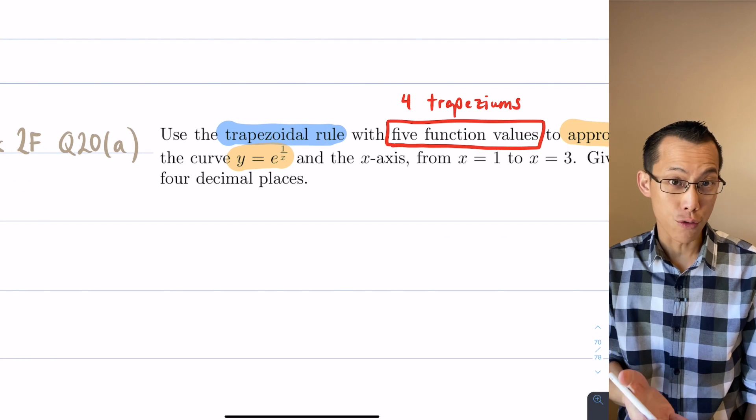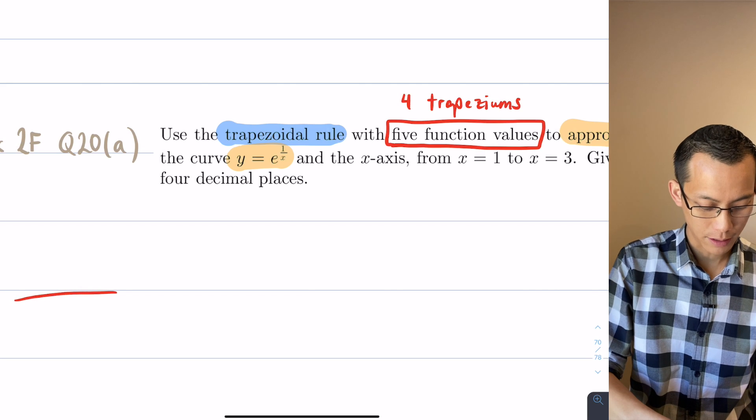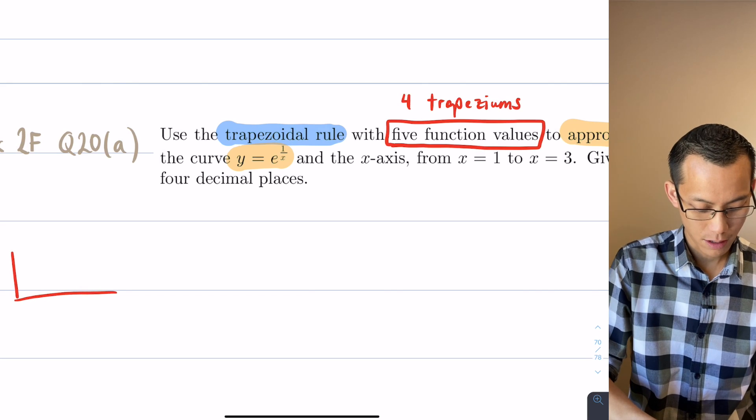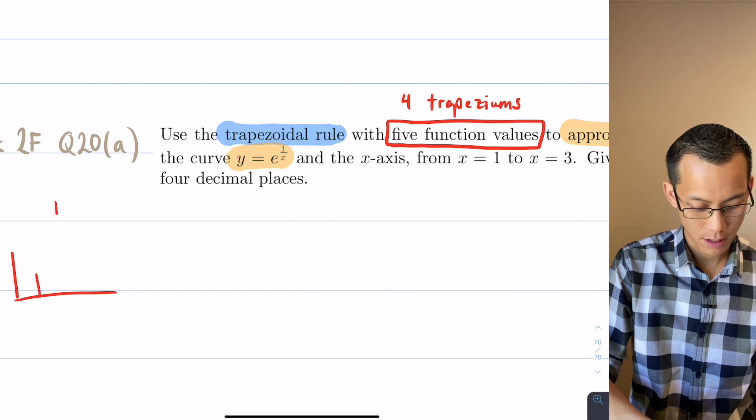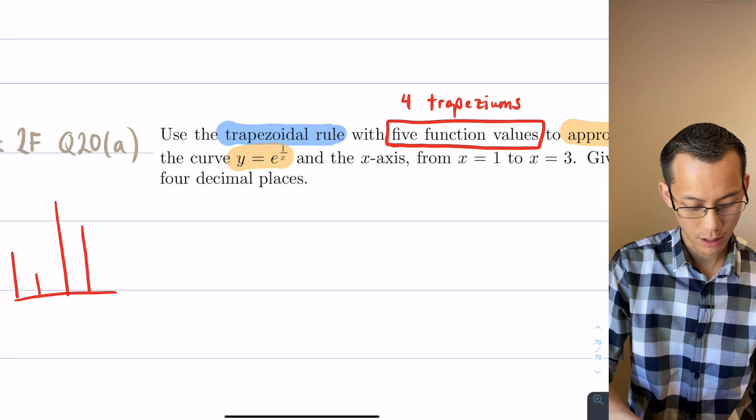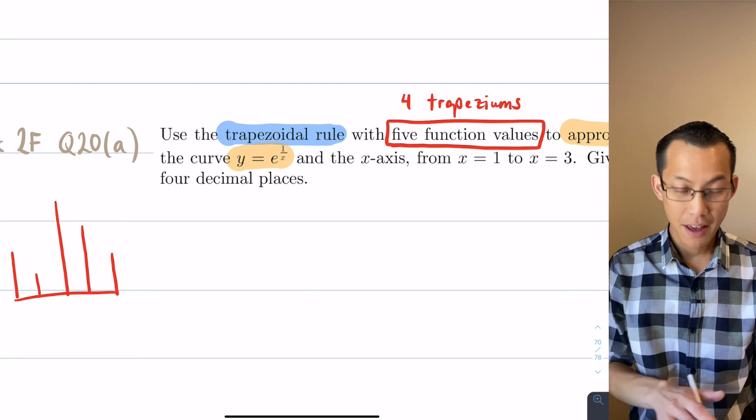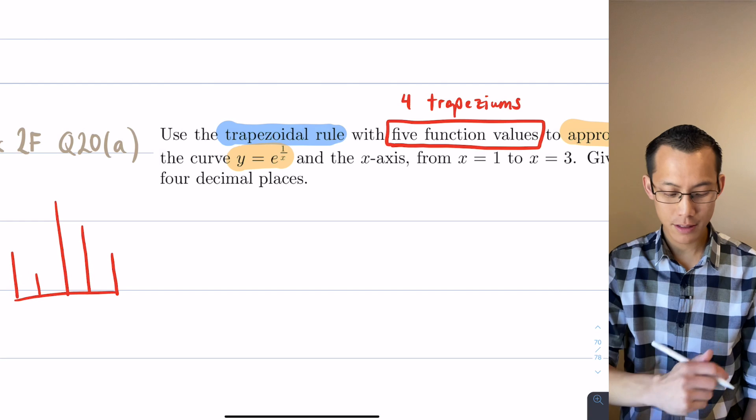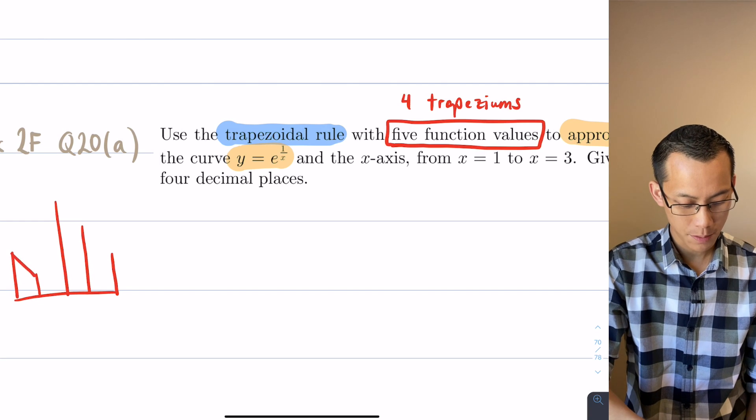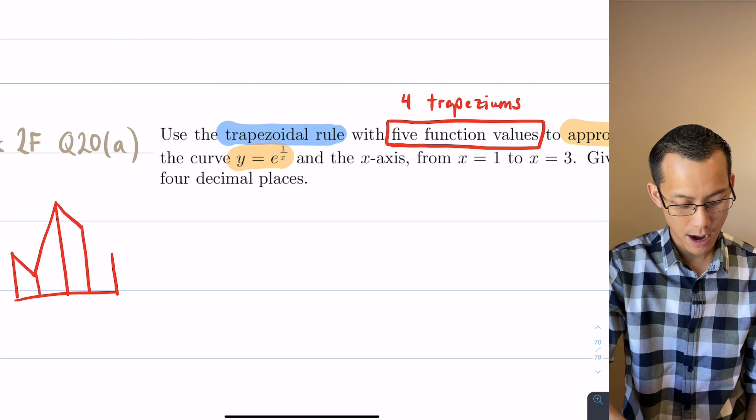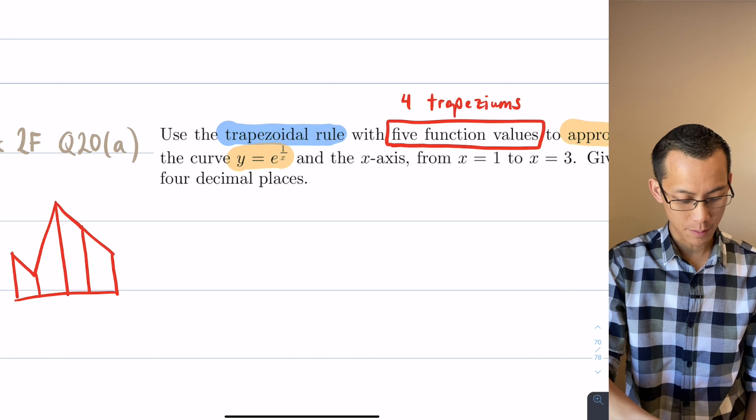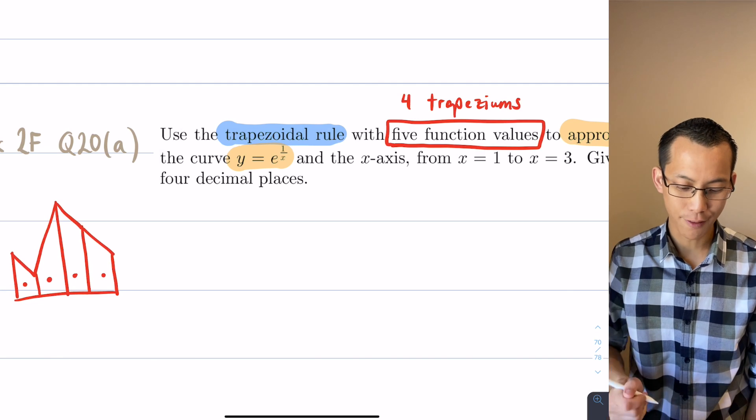Another way you could think about it is you could draw the five function values. Here's a function value, here's another function value, here's another one, here's another one and the final one over here. There's five vertical lines and if I join up all of the tops there you can see there are your four trapeziums: one, two, three and four.